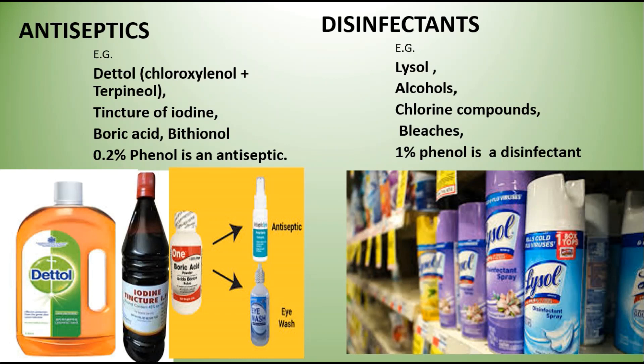Examples of antiseptics include Dettol, which is a mixture of chloroxylenol and terpene oil, tincture of iodine, boric acid, and bithionol. Examples of disinfectants include Lysol, alcohols, chlorine compounds, and bleaches. Notably, phenol can act as either: at 0.2% concentration it acts as an antiseptic, while at 1% concentration it acts as a disinfectant.